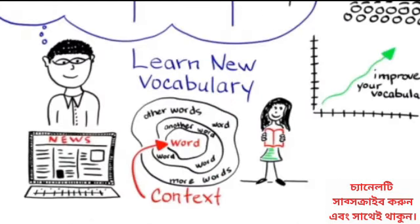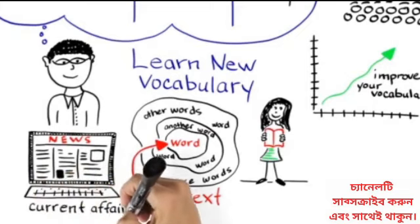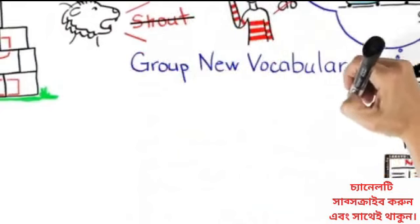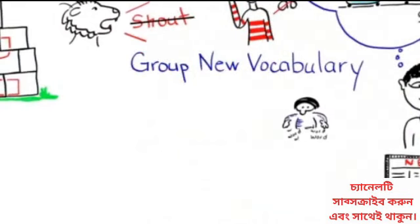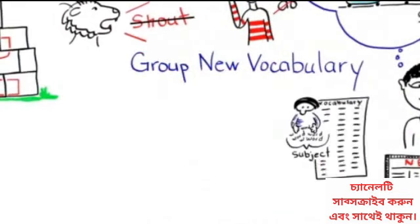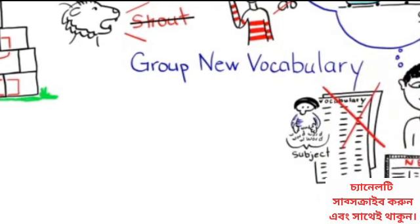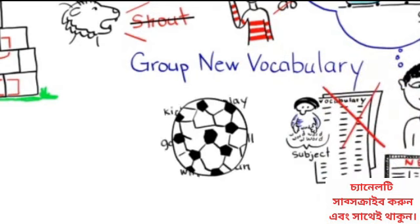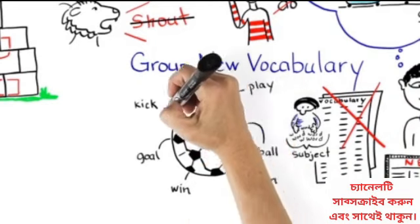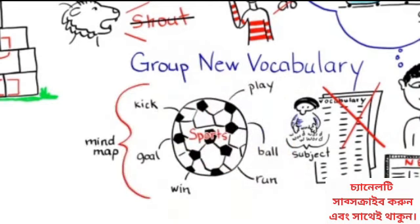News sources are a good resource. These can also help you keep up on the vocabulary of current affairs. Group new vocabulary into related subjects and learn these together, rather than making long lists of unrelated words. For example, make a list of words about sports. Using mind maps often helps with this.